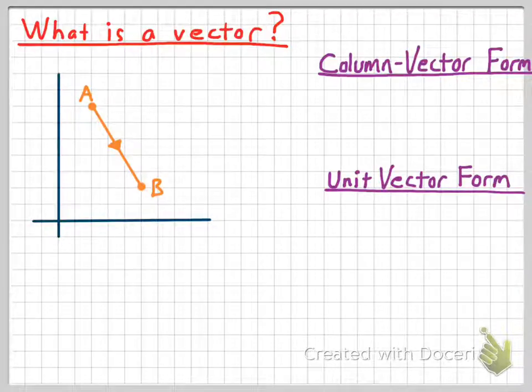Alright, so first thing we need to make sure we know is what a vector is and the best description I can give for a vector, I'll give the definition in a moment, but a description would be that a vector is very similar to a ray in that it is something that has a direction. Now, I have a picture of a vector right here in two dimensions and you see this arrow right there indicates that this vector is traveling from point A to point B.